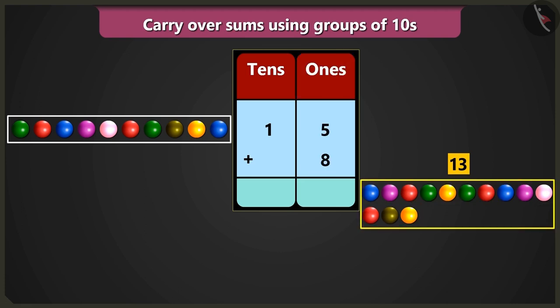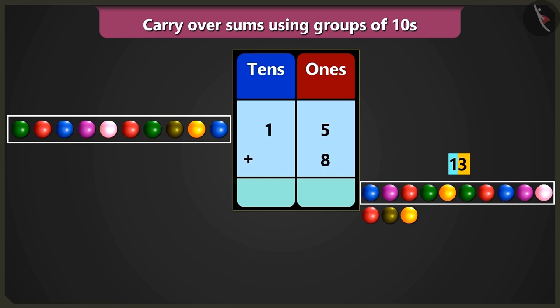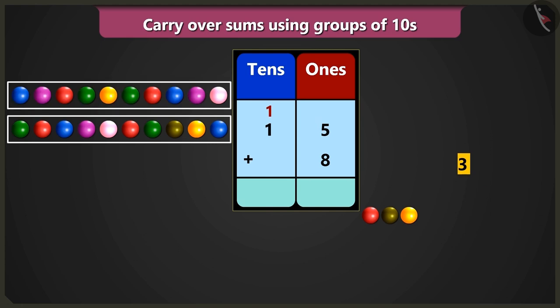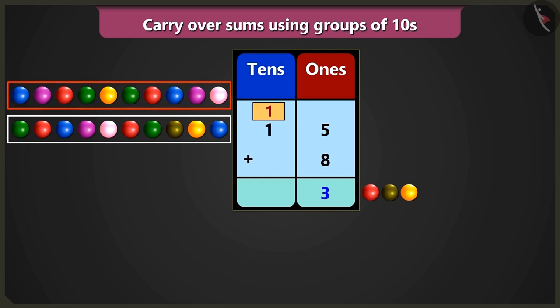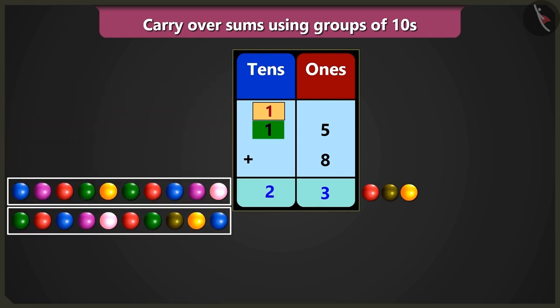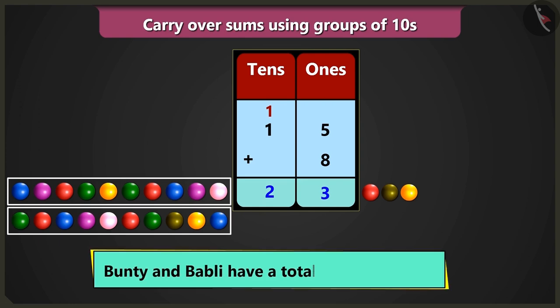Now from 13, we will take 1 ten and write it in the box of tens — write on top in small letters. That is, we will carry over 1 and write 3 in the ones place. So in the box of tens, when we add 1 ten and another 1 ten, we will get 2 tens, that is 20. This means we earlier had 2 tens and 3 ones, that is 23 marbles.